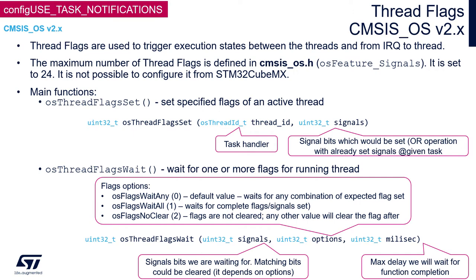To set specified flags within a selected task thread, we need to use the osThreadFlagsSet function. It needs two arguments: a handle to the task where we would like to set the flags, and the flags mask we would like to set. The values sent via this function will be ORed – an OR operation is performed between the mask we would like to set and the existing one present within the selected task control block. This function returns the flags after the setting operation. Please note that we cannot clear flags using osThreadFlagsSet.